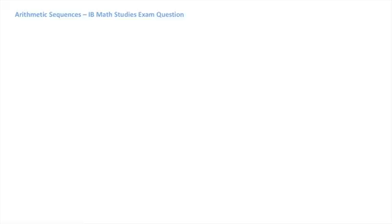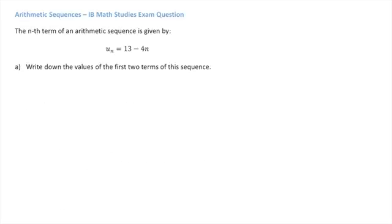In this video, we solve a typical IB Math Studies exam question involving arithmetic sequences. We're told that the nth term of an arithmetic sequence is given by the formula un = 13 - 4n. We're asked to write down the values of the first two terms of this sequence, what is the sequence's common difference, and finally, to calculate this sequence's 30th term.